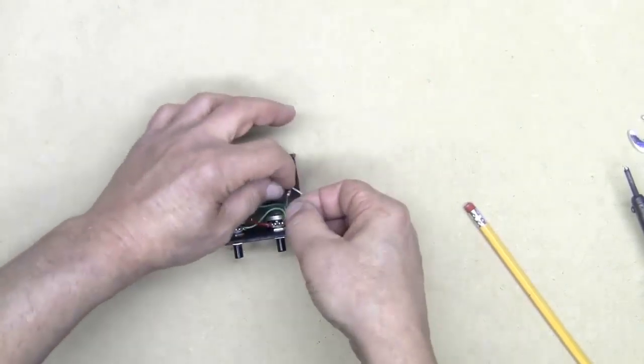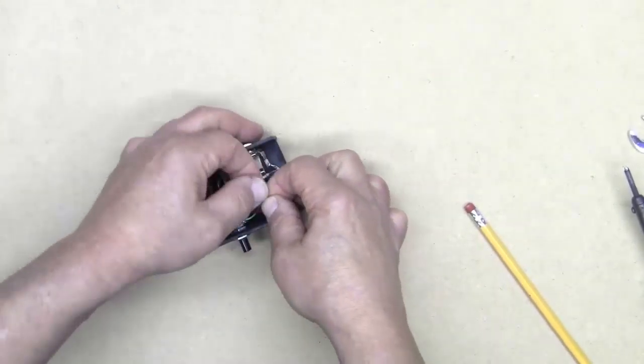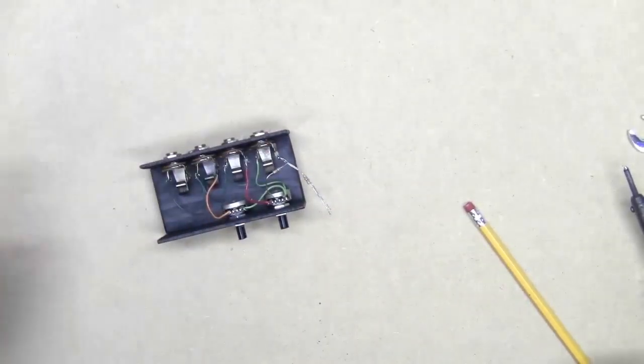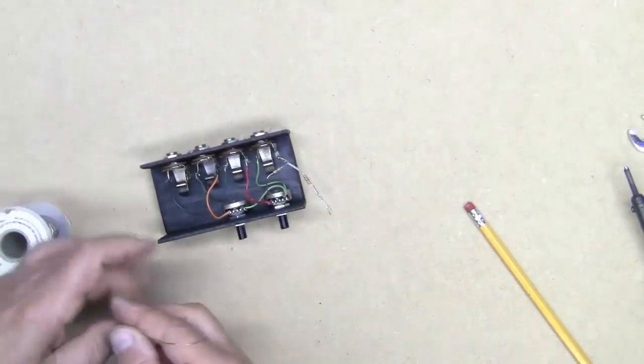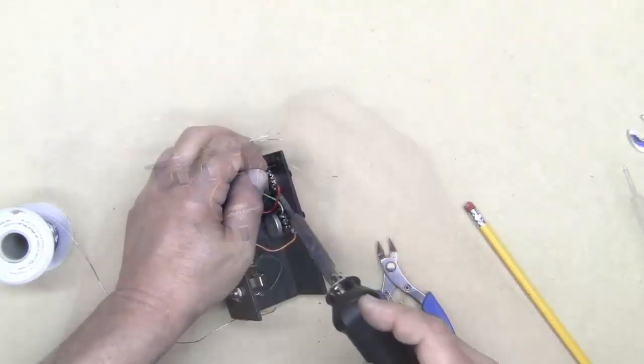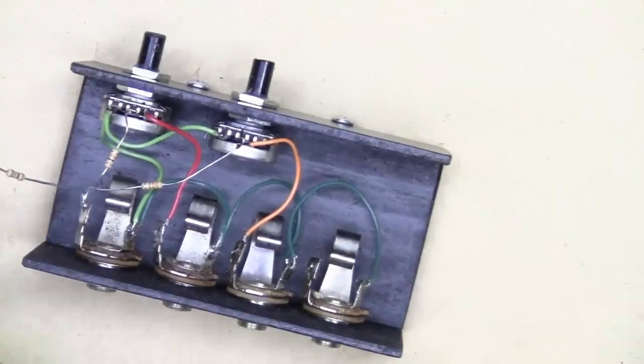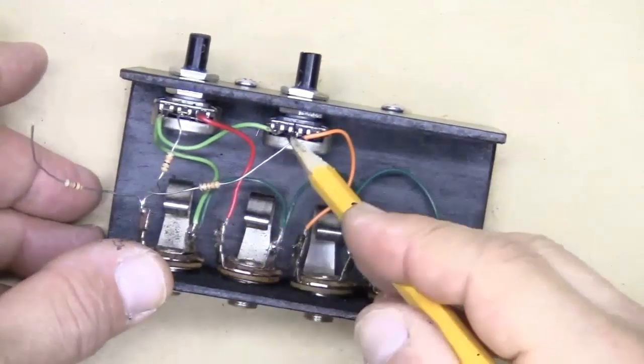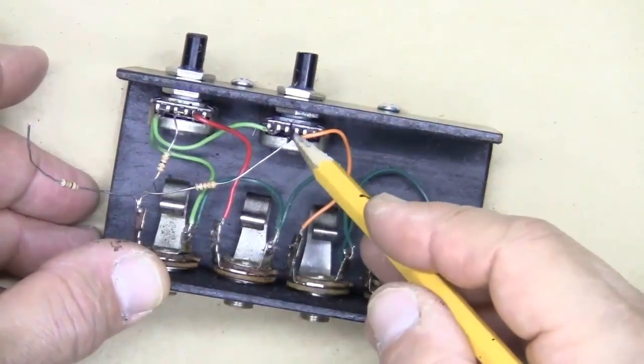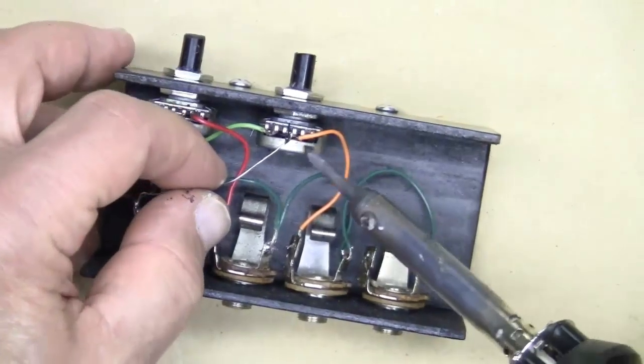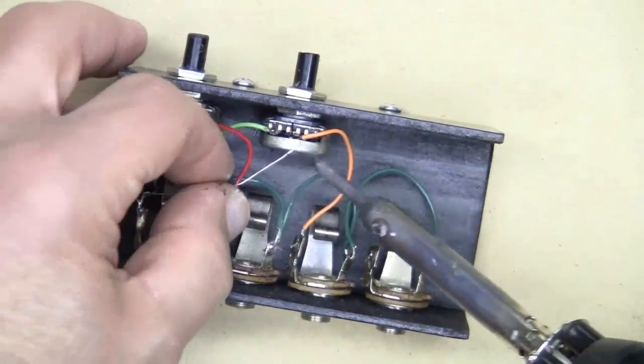Now I'm going to attach one of those 10K resistors to the center lug of this 10K pot. I've also positioned one of the 10K resistors on the center lug of this pot—I'm just going to solder it and put it in place.